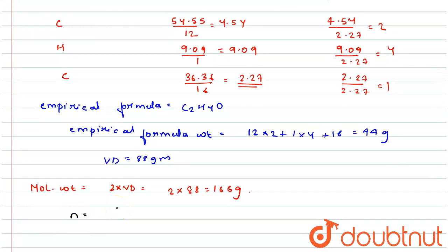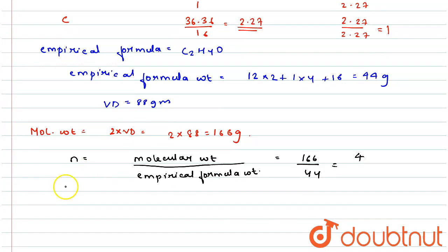So n will be molecular weight by empirical formula weight. N is equal to molecular weight divided by empirical formula weight, so 176 divided by 44, this will come as 4.